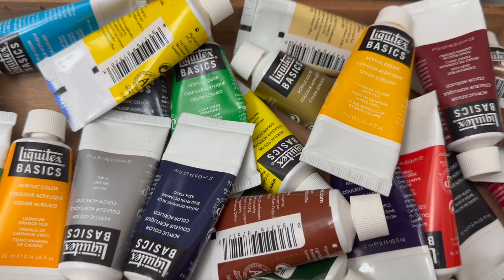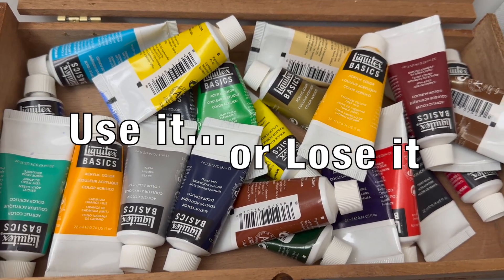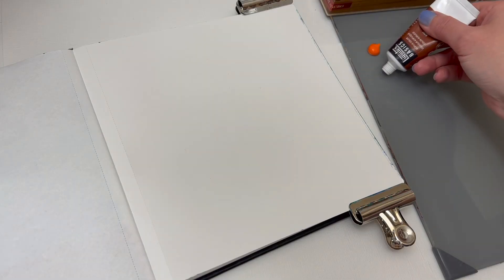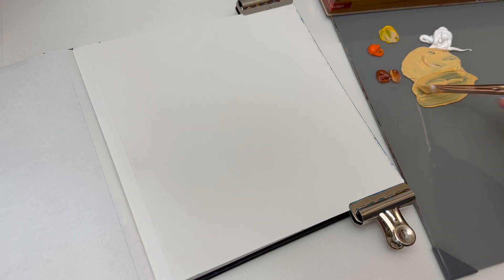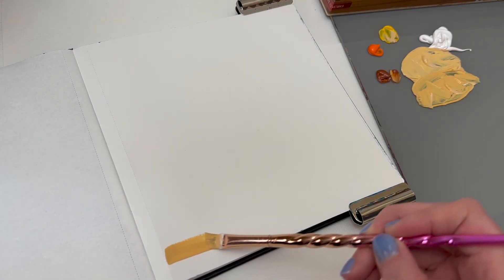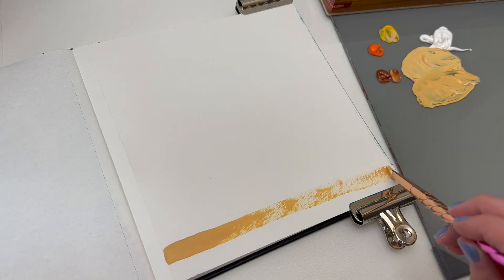I'll be using acrylic paint because I need to use it before I lose it. I found these Liquitex Basics paints stuffed in a drawer and they're about two or three years old. I'm not sure how long acrylic paint lasts before it gets all gummy or dries up. A quick question: have you ever had acrylic paint that gets all weird?